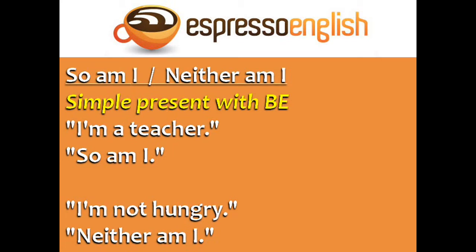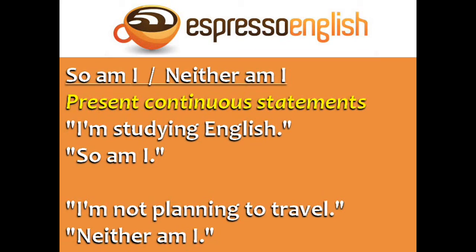You can say 'so am I' or 'neither am I' to agree with a simple present statement using 'be'. For example: 'I'm a teacher' — 'so am I'. 'I'm not hungry' — 'neither am I'. 'So am I' and 'neither am I' can also be used in response to present continuous statements: 'I'm studying English' — 'so am I'. 'I'm not planning to travel' — 'neither am I'.